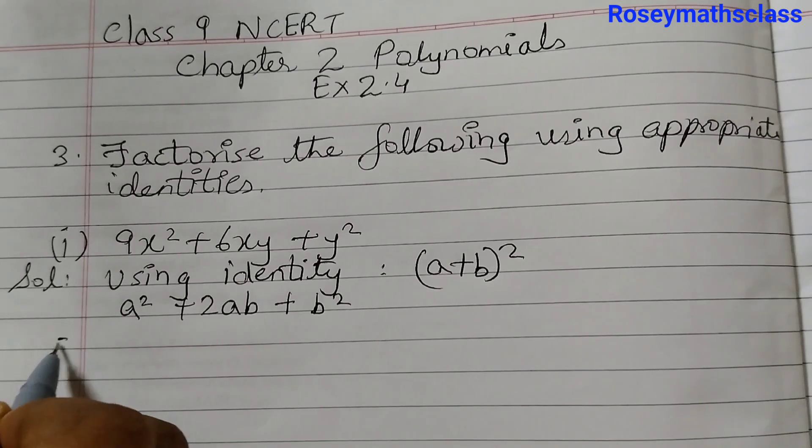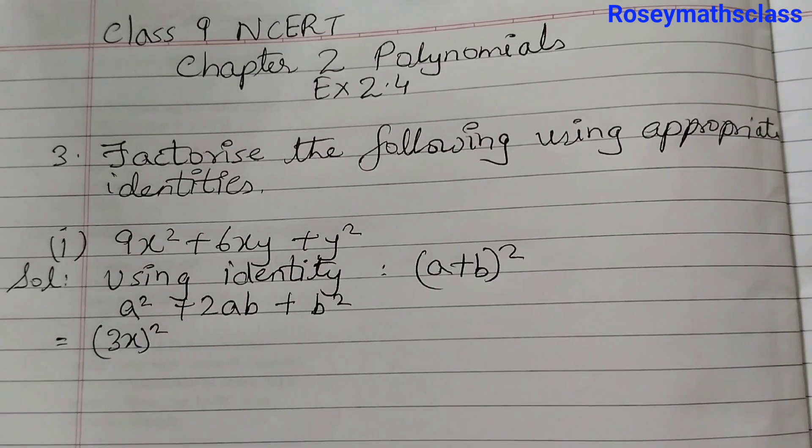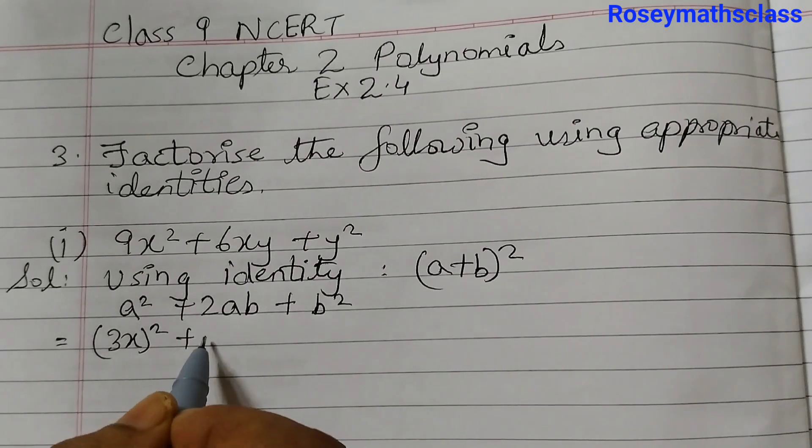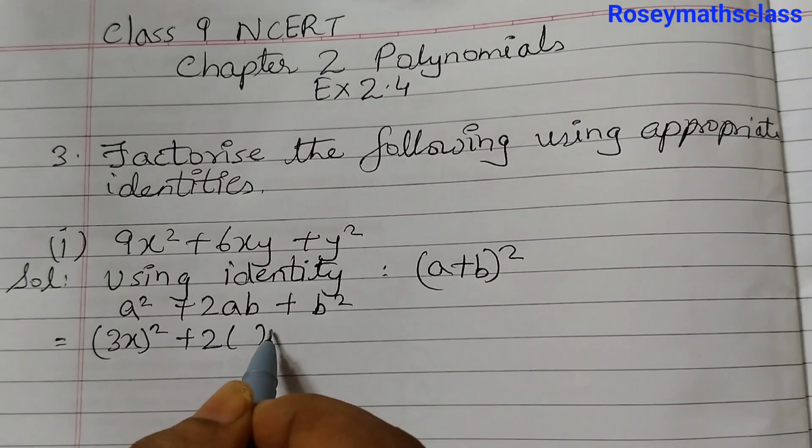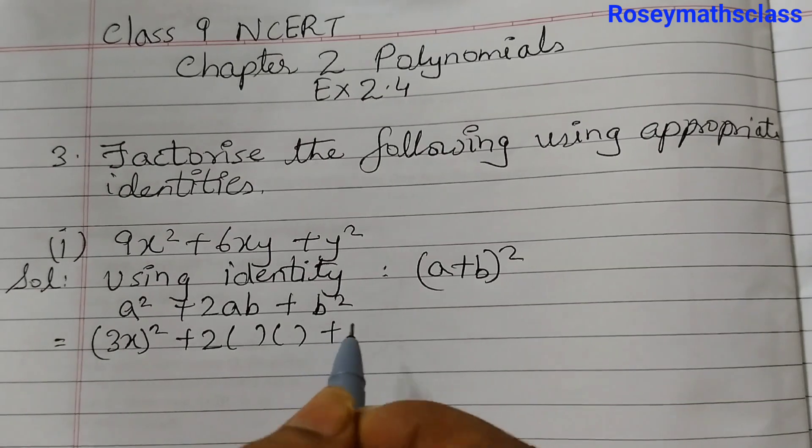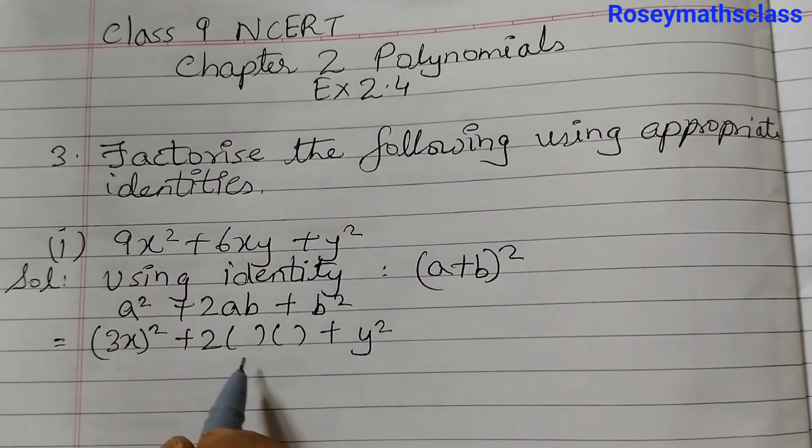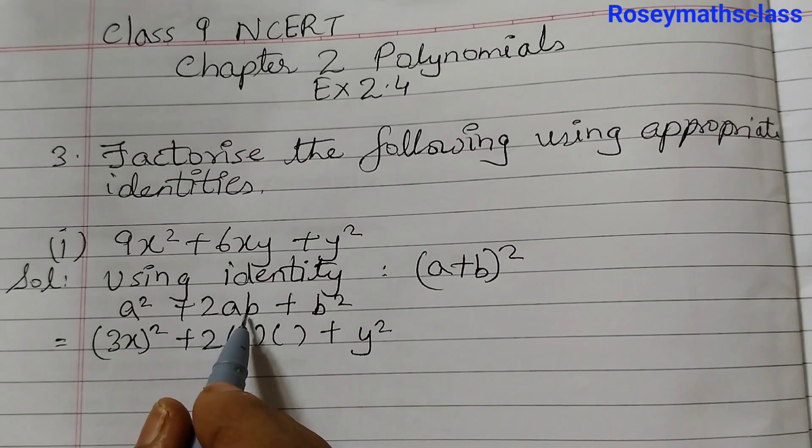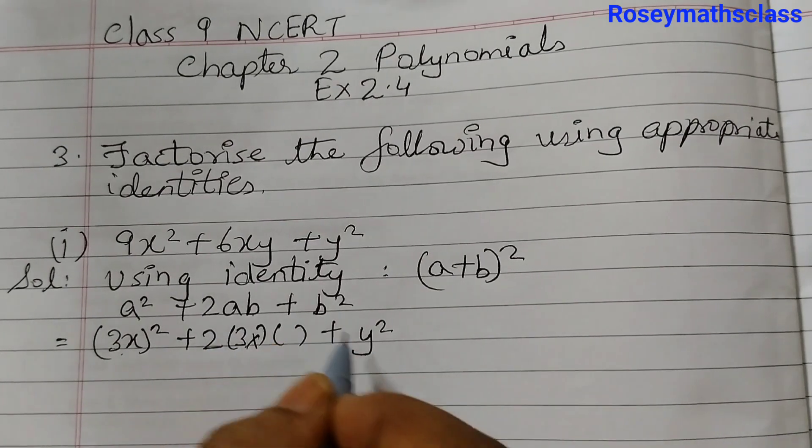So 9x squared we can write as 3x the whole squared plus 2ab. So as of now we can just leave it like this. Plus b squared. b is y squared. So here we will fill in what is a and what is b. a is 3x, b is y.